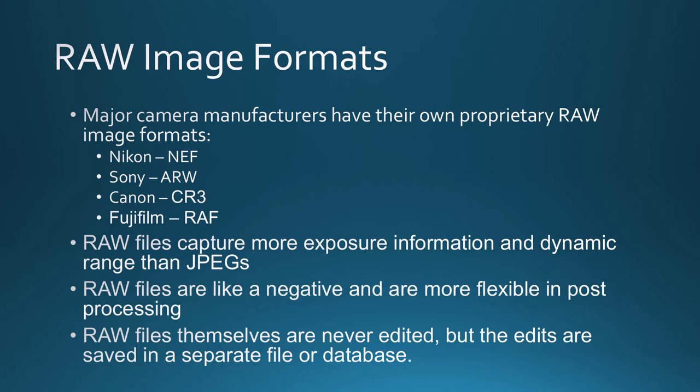RAW files capture more exposure information and dynamic range than JPEGs. RAW files are like a negative and are more flexible in post-processing. When you print an image or view it on a monitor, you have to bring the range down to the whitest white and darkest dark of that medium. Those ranges are a lot lower than what you can actually see in real life — outside you can see really bright highlights and very dark shadow detail. With RAW files, you can move these ranges around and interpret how they map to the medium, whether it's a monitor or a piece of paper.